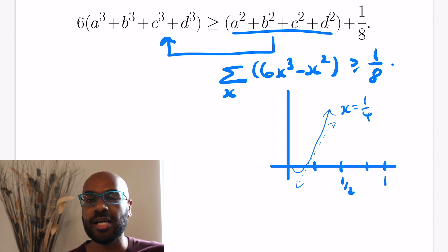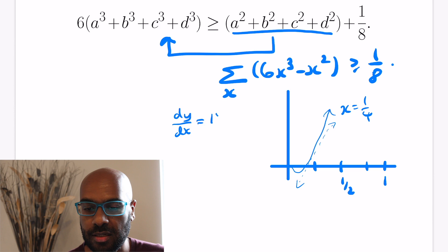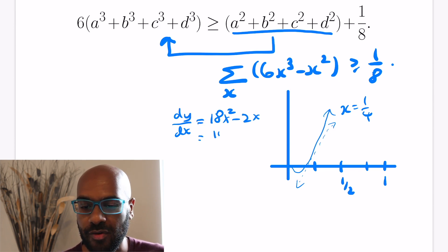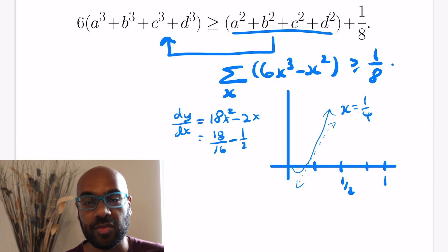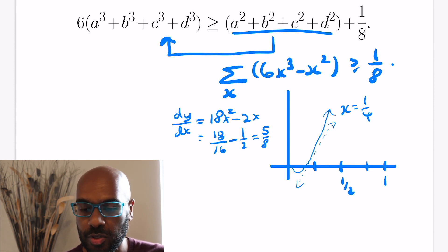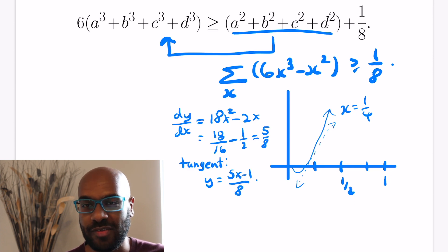We can compute the tangent line using derivatives. Differentiating 6x³ - x² gives 18x² - 2x. Plugging in x = 1/4 gives 18/16 minus 1/2, which simplifies to 5/8 — that's the slope of the tangent. Using standard calculus, the equation of the tangent line is y = (5x - 1) / 8.